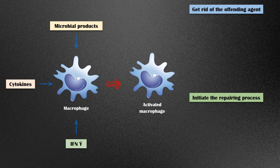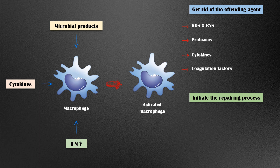To get rid of the offending agent, macrophages secrete various chemicals, including reactive oxygen and nitrogen species, proteases which digest the pathogen, cytokines, coagulation factors, and arachidonic acid metabolites.